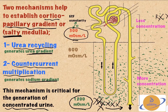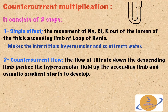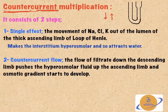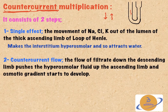There are two mechanisms that help establish these corticopapillary osmotic gradients. The first is urea recycling, which generates the urea gradient, and the second is counter-current multiplication, which generates the sodium gradient. These two mechanisms are important for the generation of concentrated urine. Without them, we'd be unable to concentrate the urine and would lose a lot of water, making us more liable to dehydration.